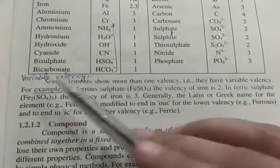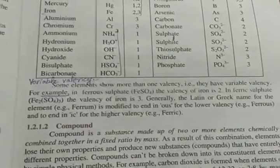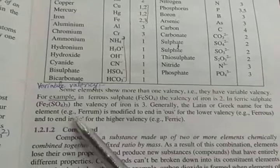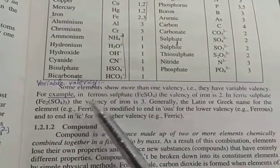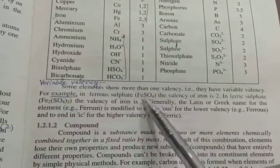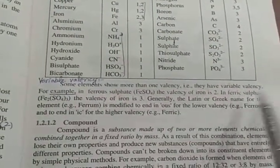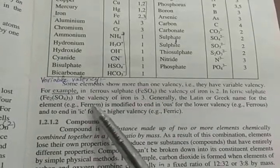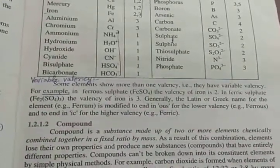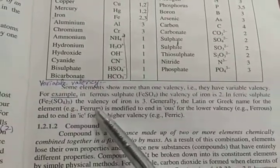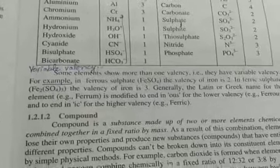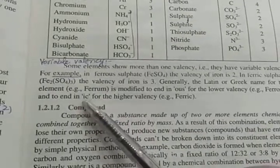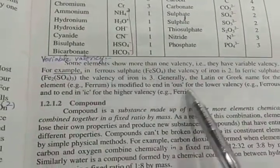If there's a variable valency question, then look at the example. For example, in Ferrous sulfate, FeSO4, iron shows valency 2. In Ferric sulfate, Fe2(SO4)3, iron shows valency 3. Generally, the Latin or Greek name of the element like Iron (Ferrum) is modified to end in -ous for lower valency and -ic for higher valency. So this is about your today's lecture.